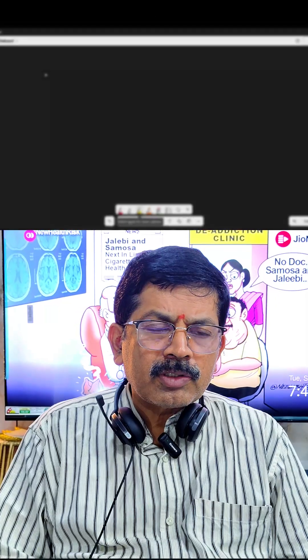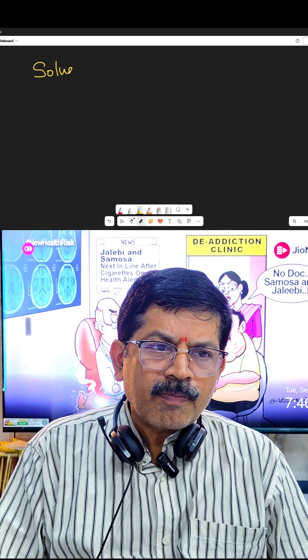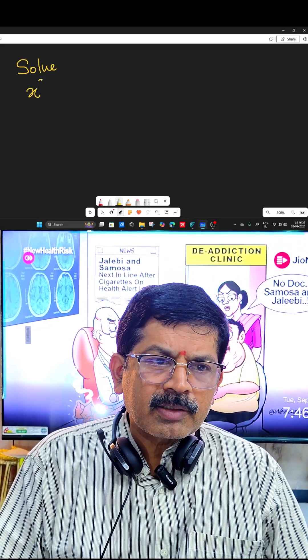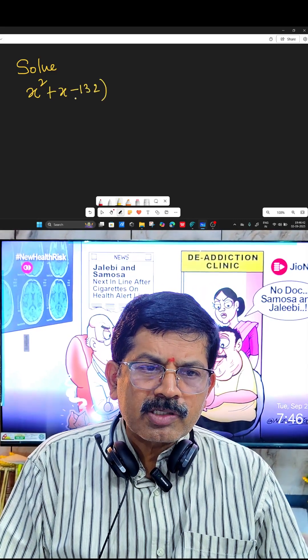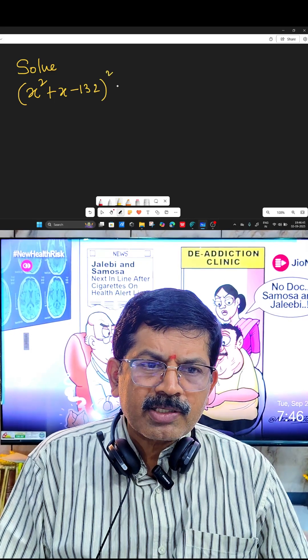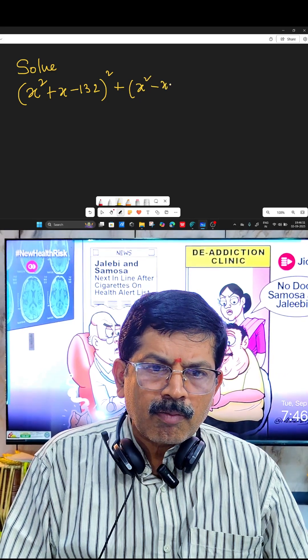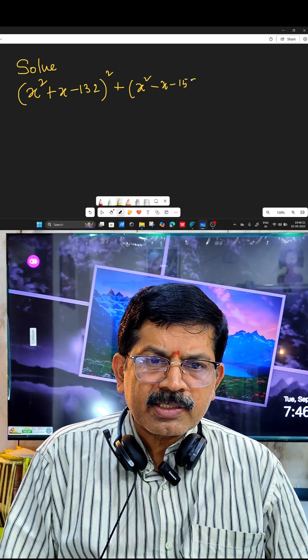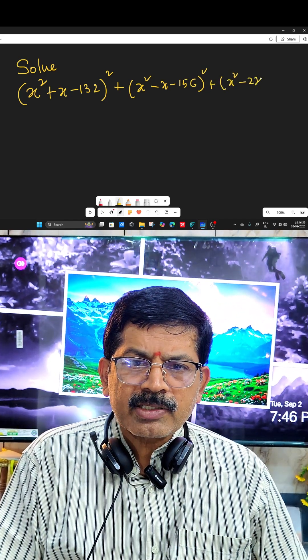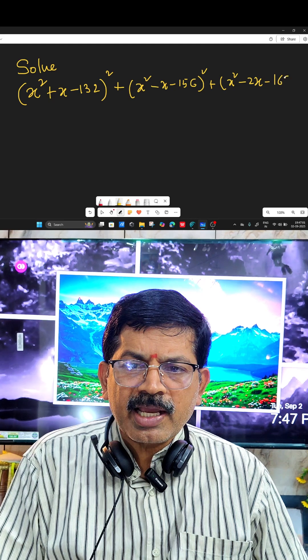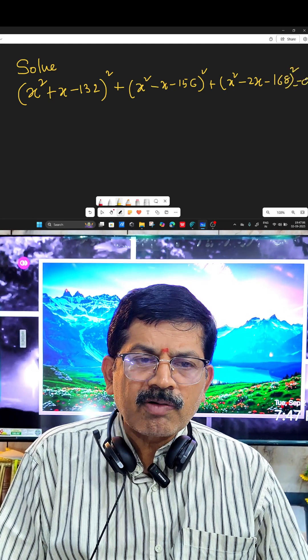You see, suppose one algebraic equation is given. Solve (x² + x - 132)² + (x² - x - 156)² + (x² - 2x - 168)² = 0. This one we have to solve.